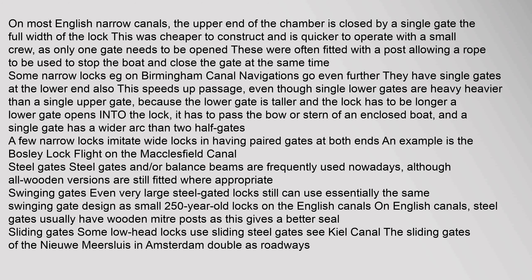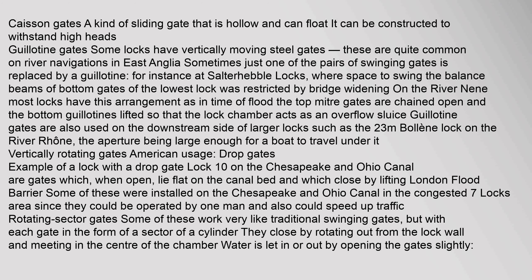Some low headlocks use sliding steel gates. Caisson gates are a kind of sliding gate that is hollow and can float, constructed to withstand high heads. Some locks have vertically moving steel guillotine gates, quite common on river navigations in East Anglia. Sometimes just one of the pairs of swinging gates is replaced by a guillotine — for instance at Salterhebble locks where space to swing the balance beams was restricted by bridge widening. Guillotine gates are also used on the downstream side of larger locks, such as the 23-metre Bollène lock on the River Rhône, where the aperture is large enough for a boat to travel under it.